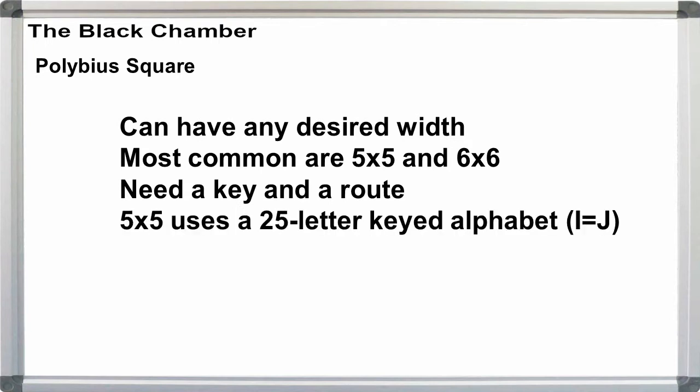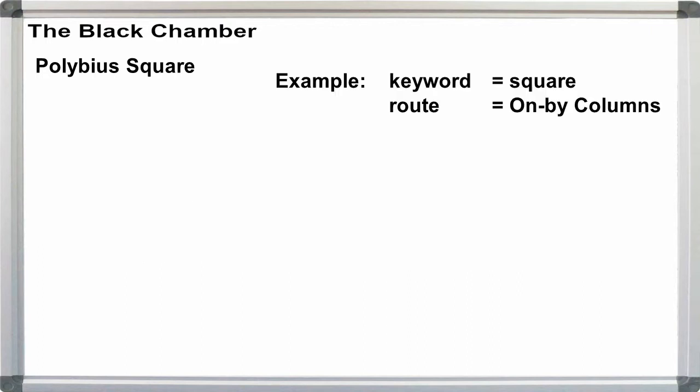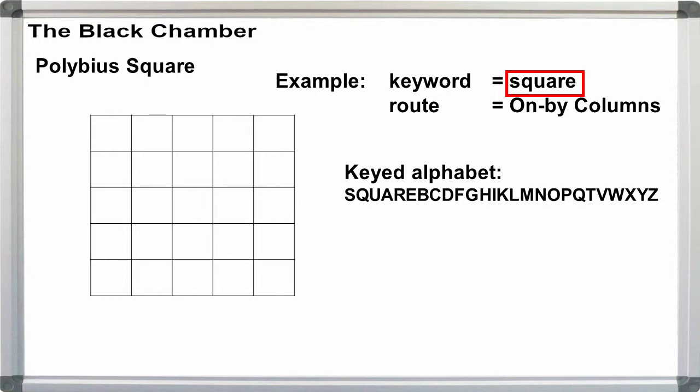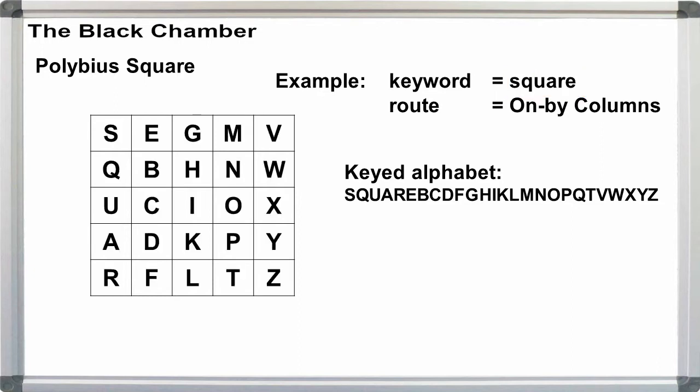First, we're using a keyed 25-letter alphabet, so we need the keyword for that, remembering that I and J double up. Second, we need to write the alphabet into the square following a legal route transposition path. For our example, let's use square and on by columns. Both steps are described in episode 8, the route transposition intro video. We take our keyword square and we write it in, in columns. And that's all there is to it. We have our 5x5 square.